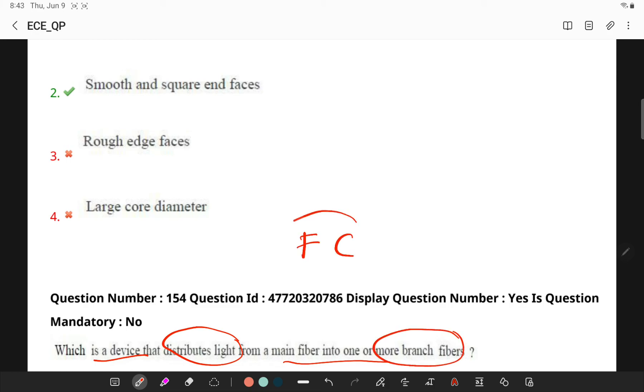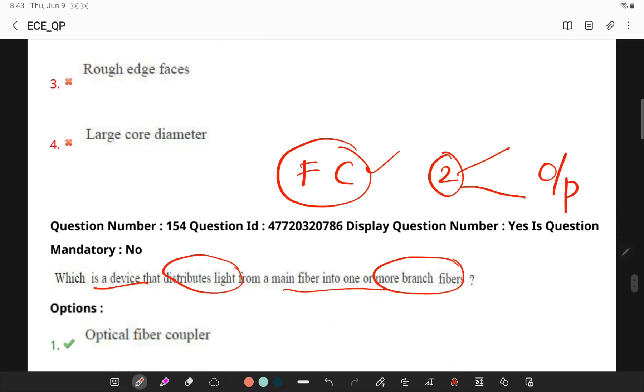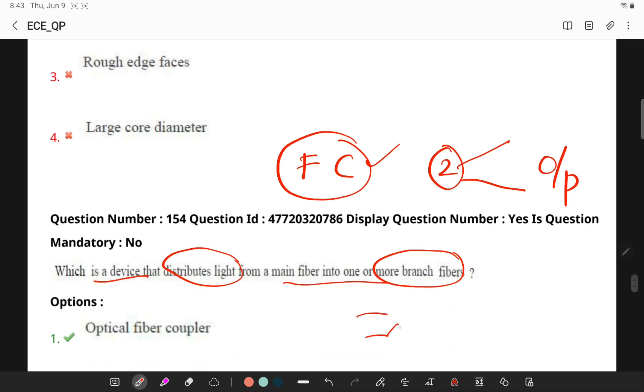A fiber coupler main function is to split input from two input light into two or more outputs. It will be looking something like port 1, port 2. So this is a coupler which will be splitting the light into two or more outputs.